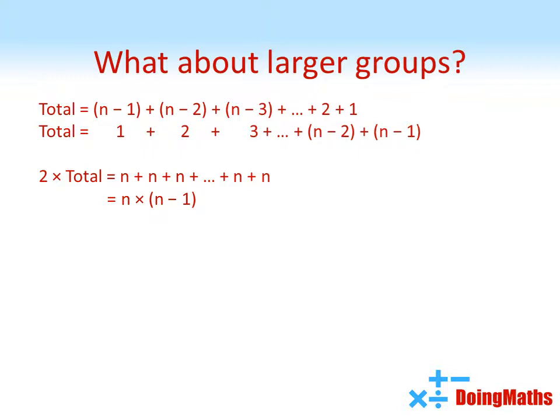So the total is just going to be half of that right hand side. So n times n minus 1 divided by 2. We can use this formula to work out how many handshakes are needed for groups of any size.